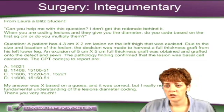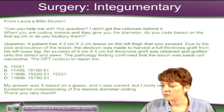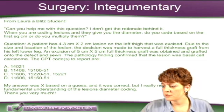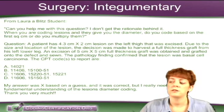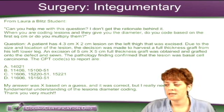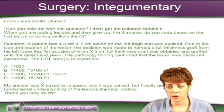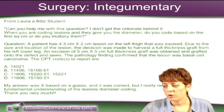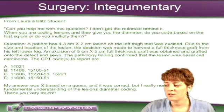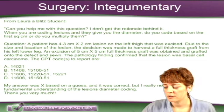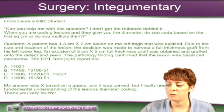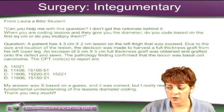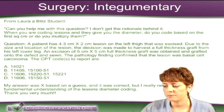Here's a question from Laura, a Blitz student. It's about integumentary surgery coding and she says: when you are coding lesions and they give you the diameter, do you code based on the first square centimeter or do you multiply them?